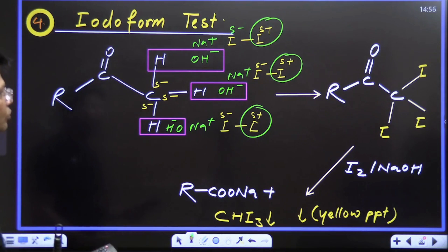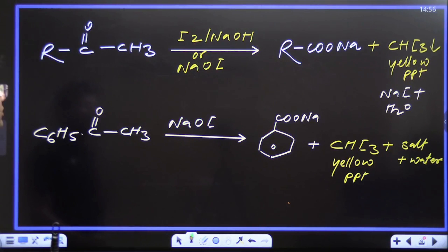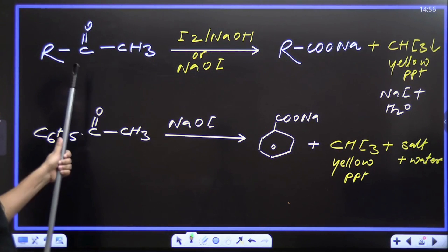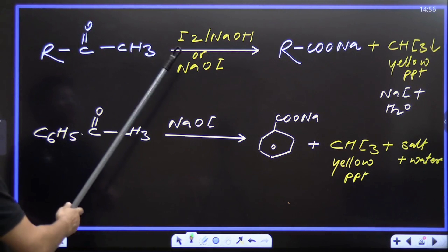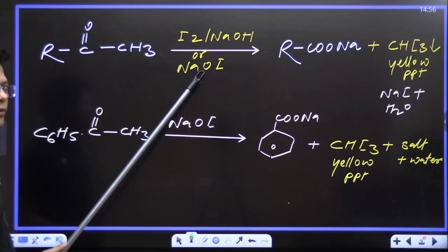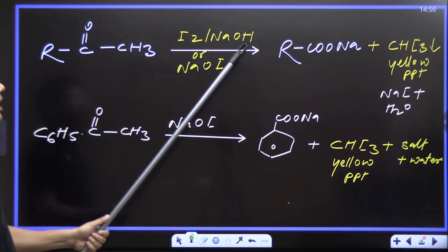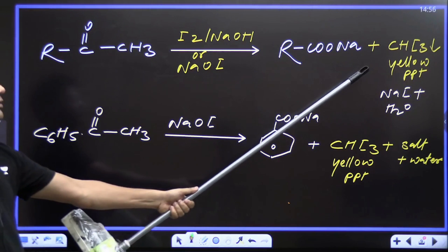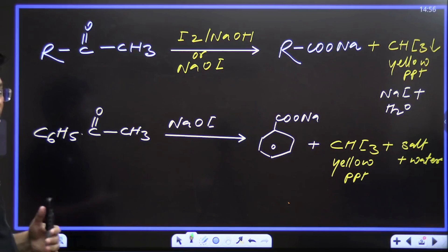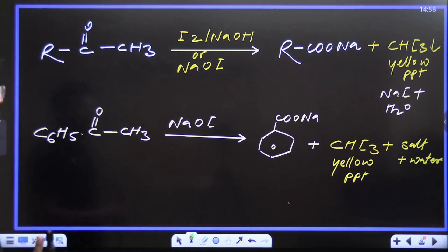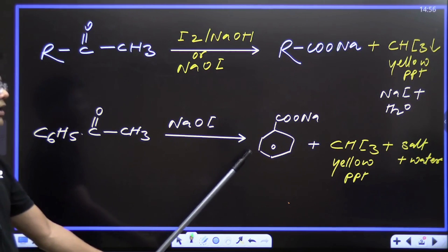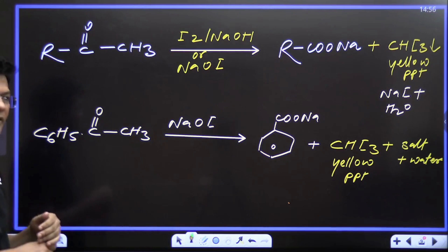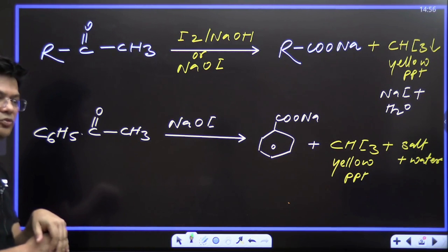Let's solve a question — don't see the answer, try to solve it. R-CO-CH₃ with I₂/NaOH (which can also be given as NaOI, sodium hypoiodite) will form R-COONa (carboxylate salt) and water along with the yellow precipitate — iodoform. So R-CO-CH₃ gives R-COONa plus iodoform (yellow precipitate). Everyone should be able to understand this.